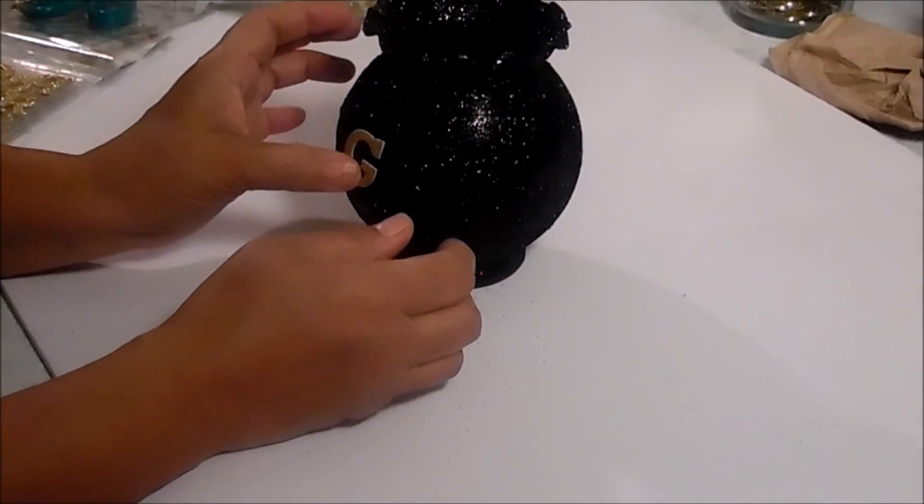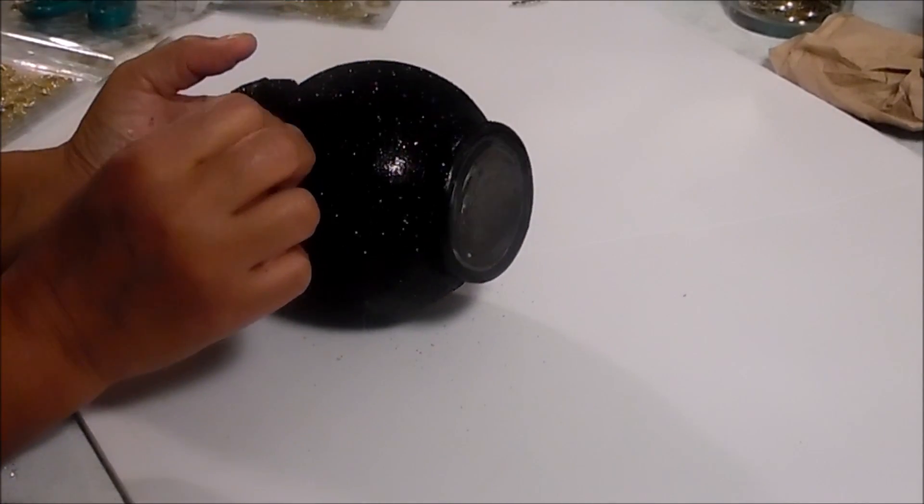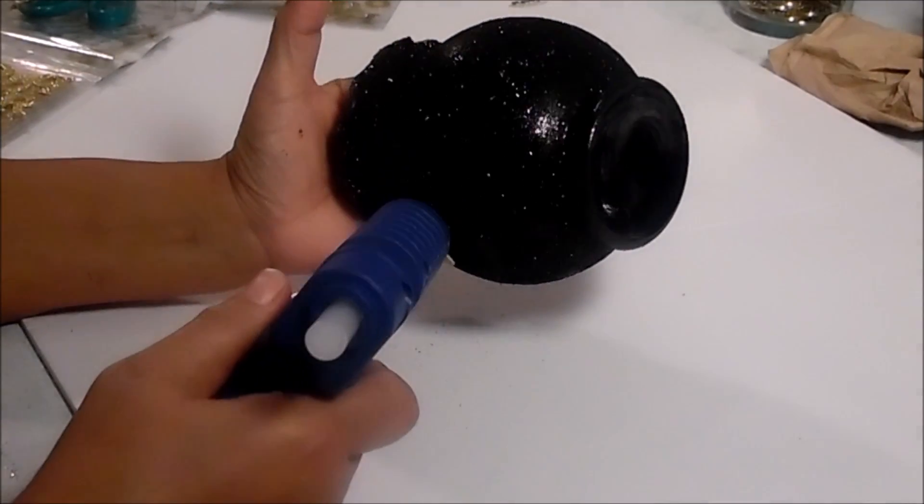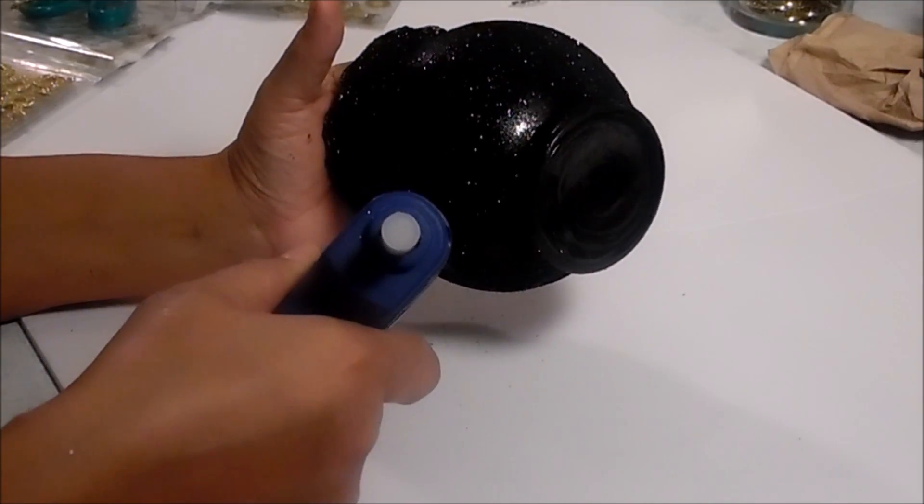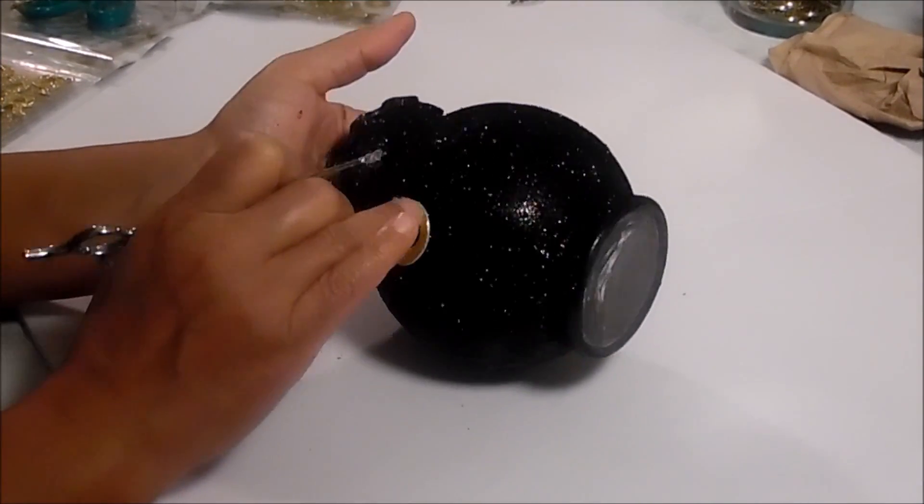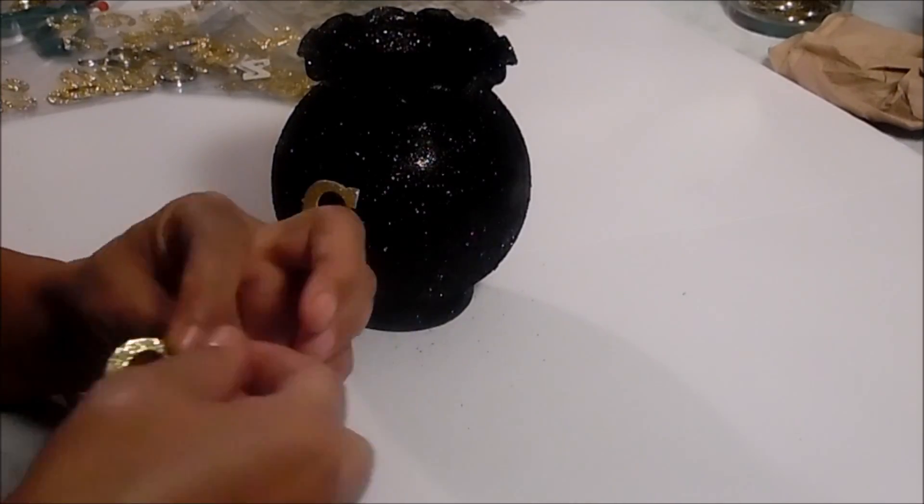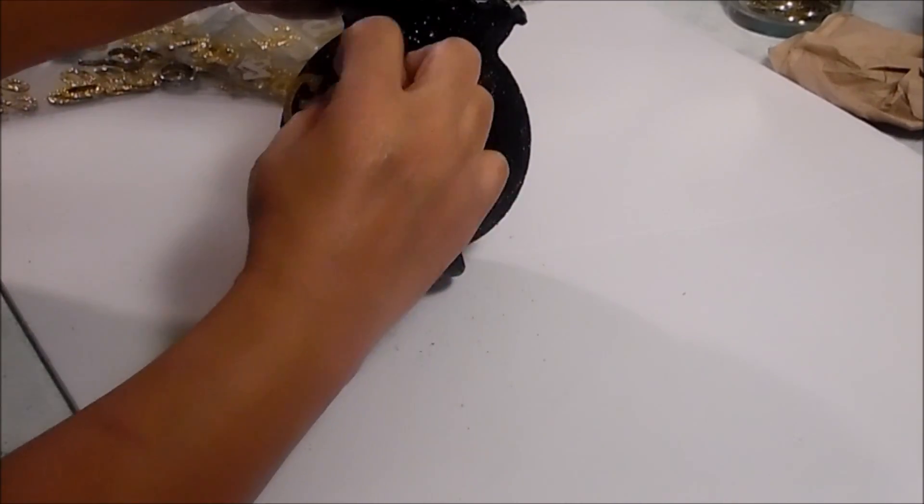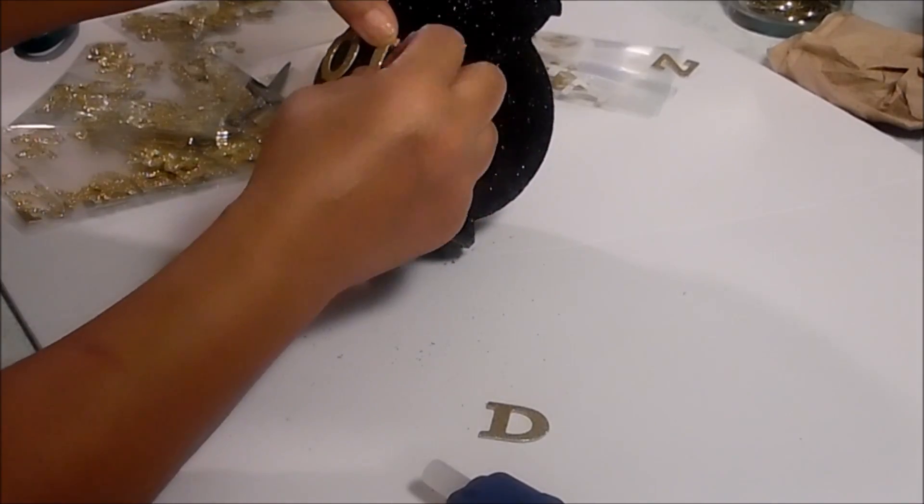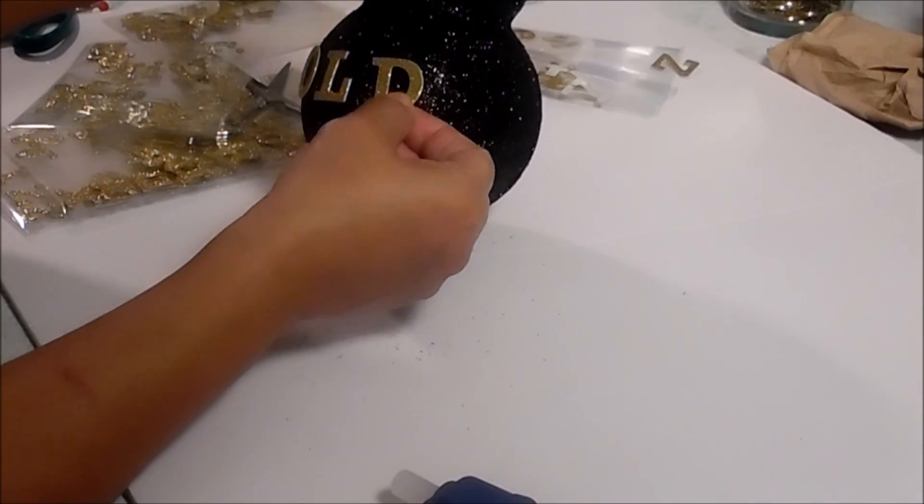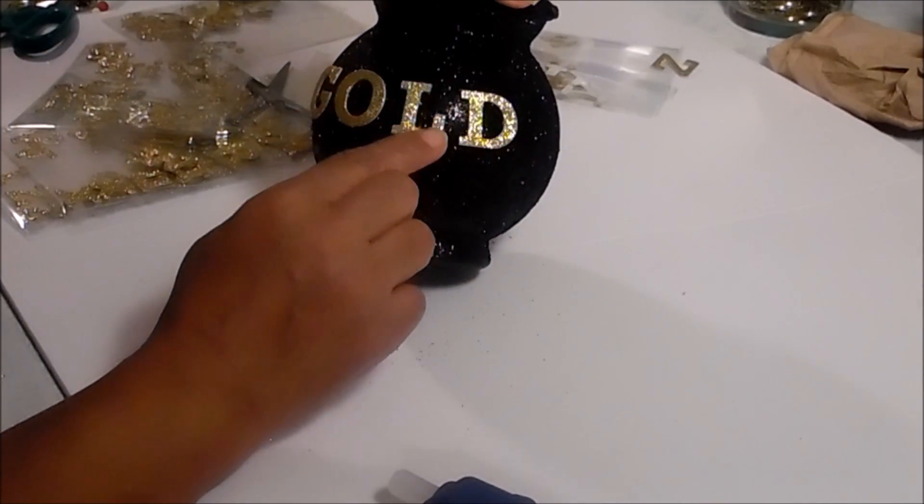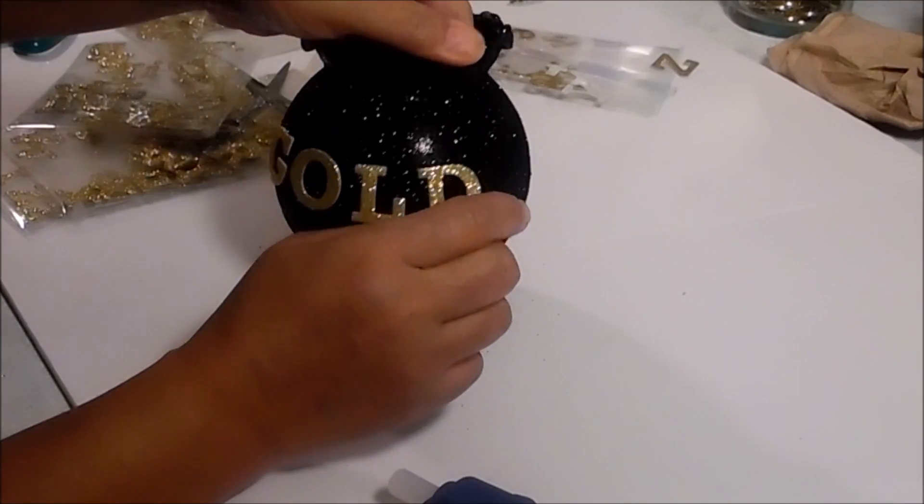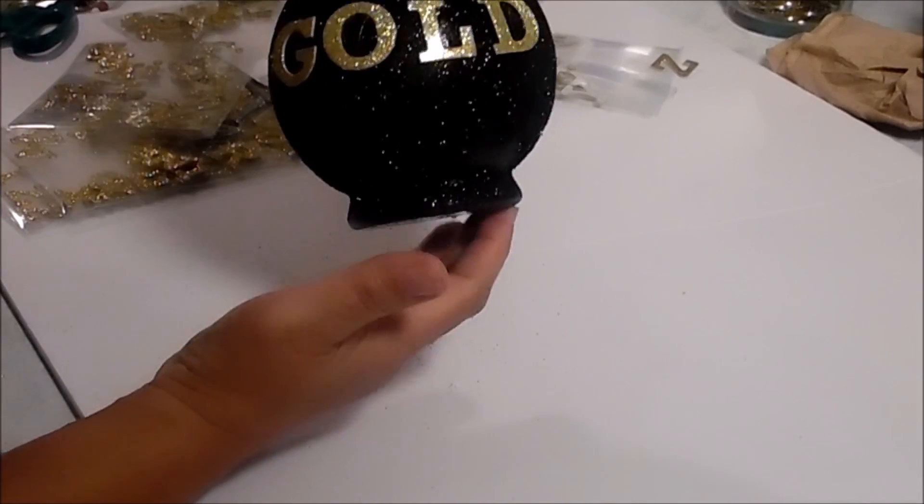And now I'll go ahead and add more glue. So what I'll do is come back now and glue the other letters down. So this is where we are so far, and now we're going to our next step. And that is making a rainbow.